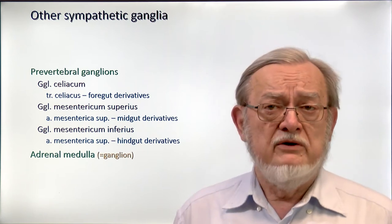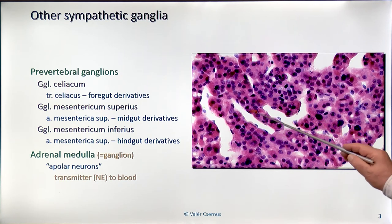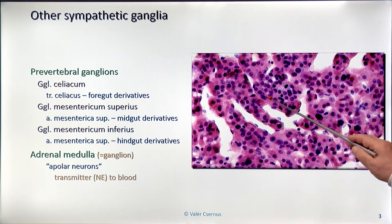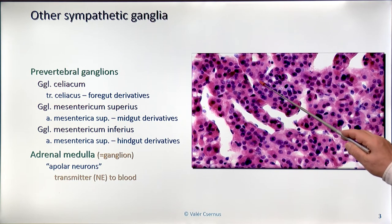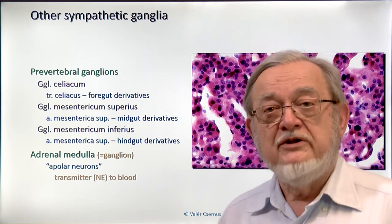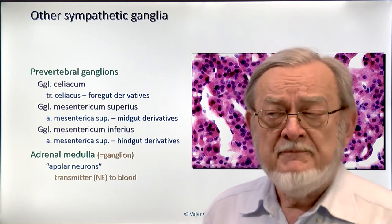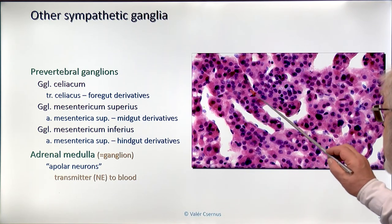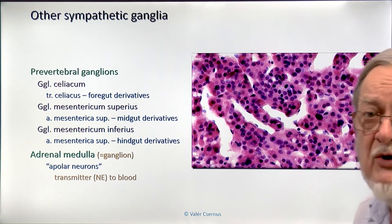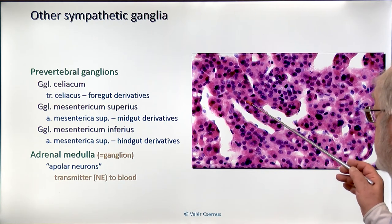There is one more structure considered a ganglion: the medulla of the adrenal gland. The medulla consists of very unique cells that look much like nerve cells — they have a bluish cytoplasm, a very active and large nucleus with diffuse chromatin, and a visible nucleolus. They look like nerve cells because they are nerve cells: they are apolar neurons. They have all the features of neurons but no processes. The pre-ganglionic fibers reach them from the sympathetic system — practically they belong to the lumbar splanchnic nerve — and as a response they produce the neurotransmitter of the sympathetic system, norepinephrine.